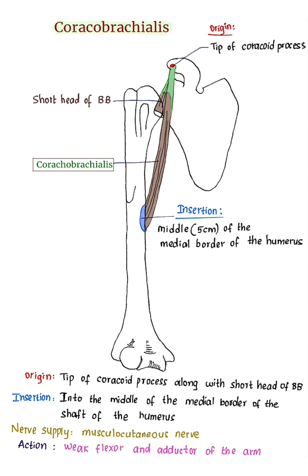Insertion: it inserts into the middle of the medial border of the shaft of the humerus. The shaft of the humerus has three borders — anterior border, medial border, and lateral border. Coracobrachialis inserts into the middle of the medial border.